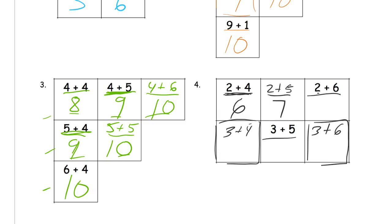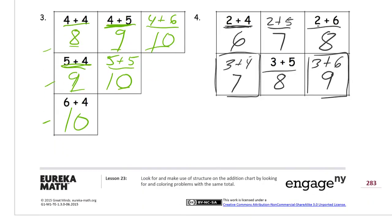So, 2 more than 6 is 8. And the 3 and the 4, if you're using the chart, that's 7. This is 8. And that's 9. And that's the homework.